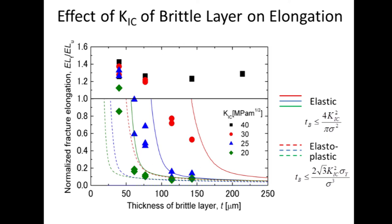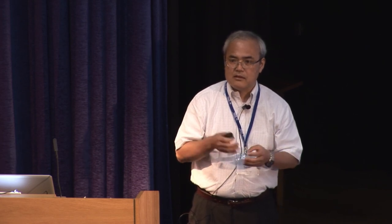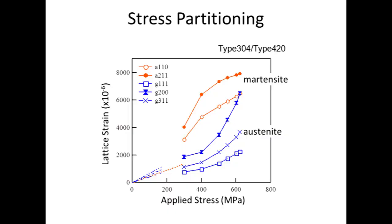The limitation of brittle layer thickness is a function of fracture toughness, as confirmed here. We prepared martensitic steels with different fracture toughness and measured the transition. Increasing fracture toughness allows thicker brittle layers. In other words, you can increase the thickness of the brittle layer if you have a martensitic steel with better toughness, or you can reduce the number of layers.